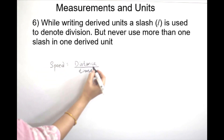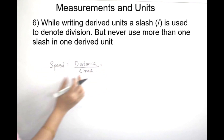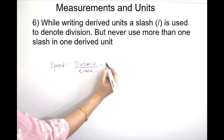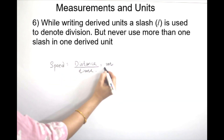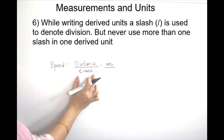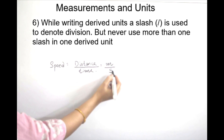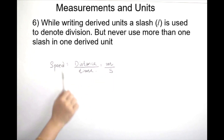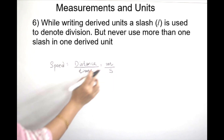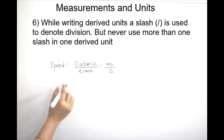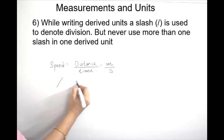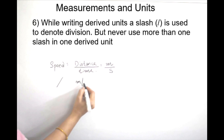The unit for distance means length, which is meter. Divide by the unit of time, which is second. So meter divided by second — that is meter per second.